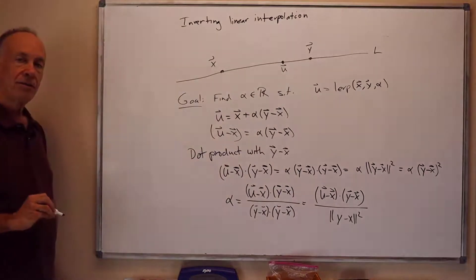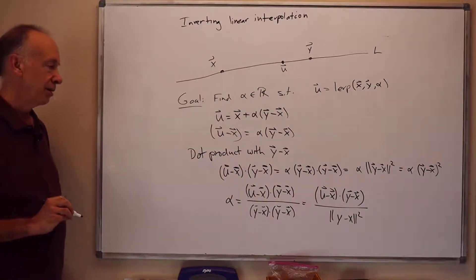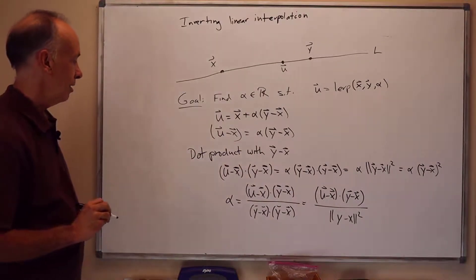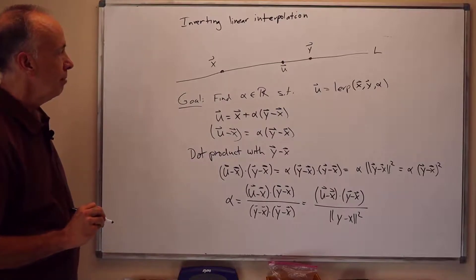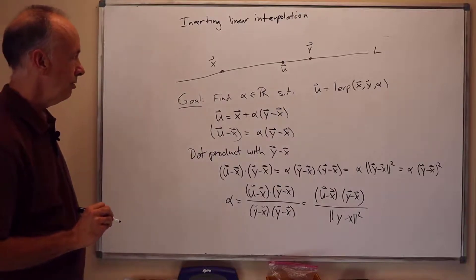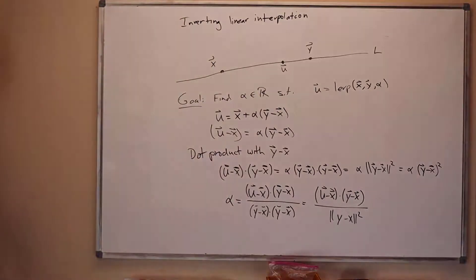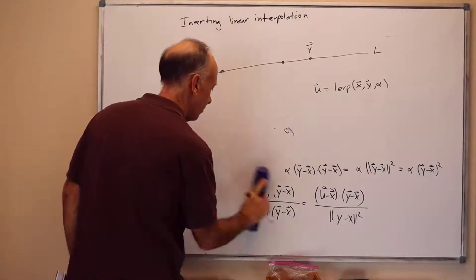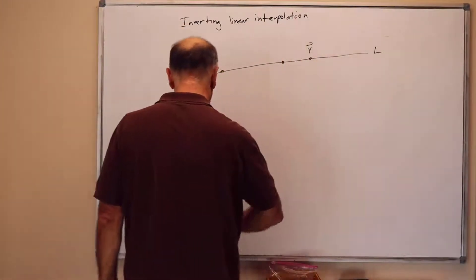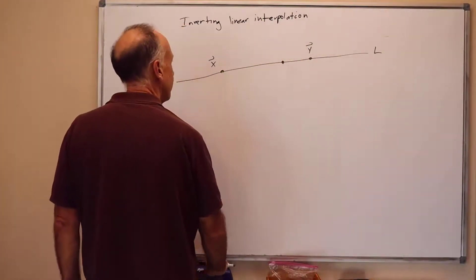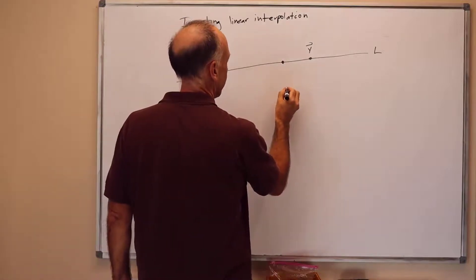So this gives us a way to invert linear interpolation for point u on the line. So what if u is not on the line? What happens then?